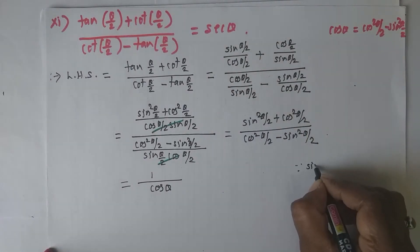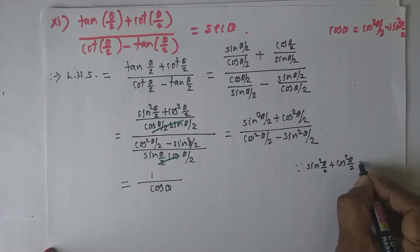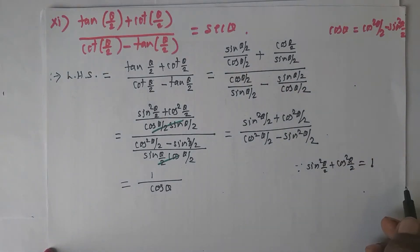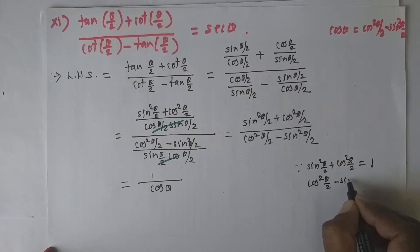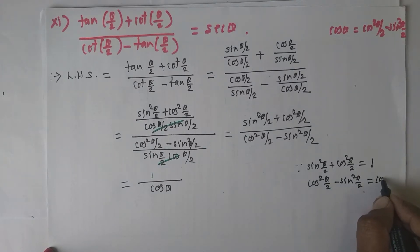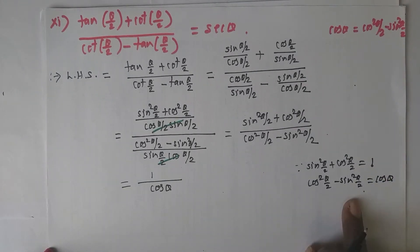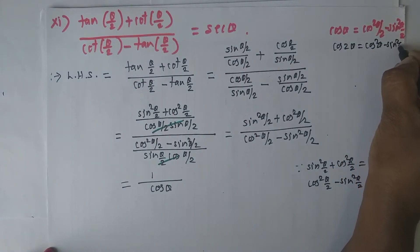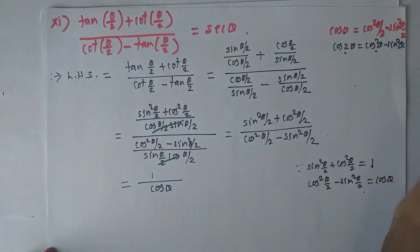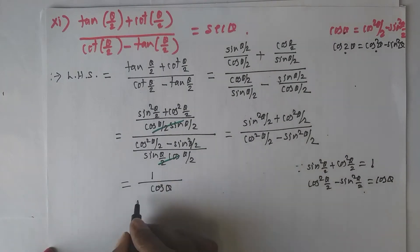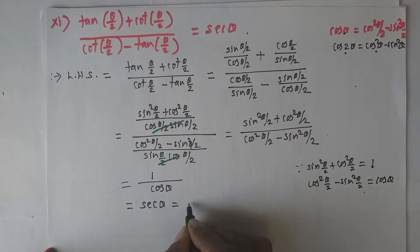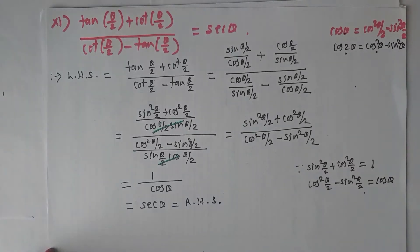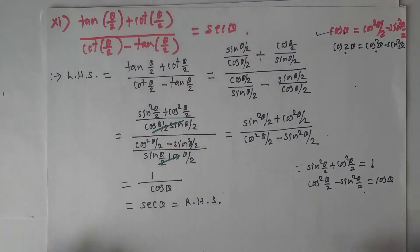So we get 1/cos θ, which is sec θ — our right hand side. We are using only the half angle formula for cos θ and the first Pythagorean identity. It is very simple.